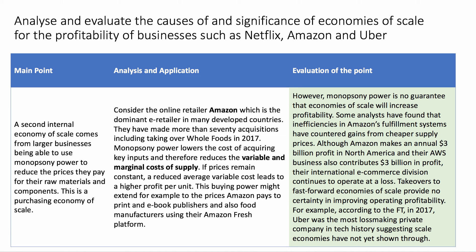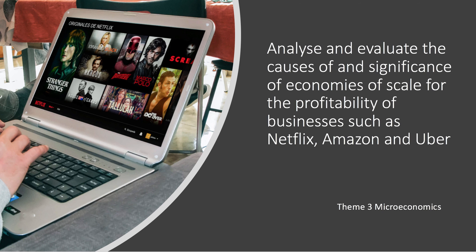However, here is a critical evaluation point: monopsony power is no guarantee that economies of scale will actually increase profits. Some analysts who have looked at Amazon carefully have found that some of their fulfilment systems are actually quite inefficient, which may have offset the gains from cheaper supply. Although Amazon makes an annual profit in North America of several billion dollars, and Amazon Web Services is highly profitable, internationally its e-commerce divisions continue to make a loss, including in the UK. Takeovers to fast-forward economies of scale provide no certainty that operating profits will go up. Another good example is Uber — Uber has scaled but is still making losses, making it the most loss-making private company in tech history, suggesting it perhaps hasn't yet achieved the economies of scale that theory would suggest.